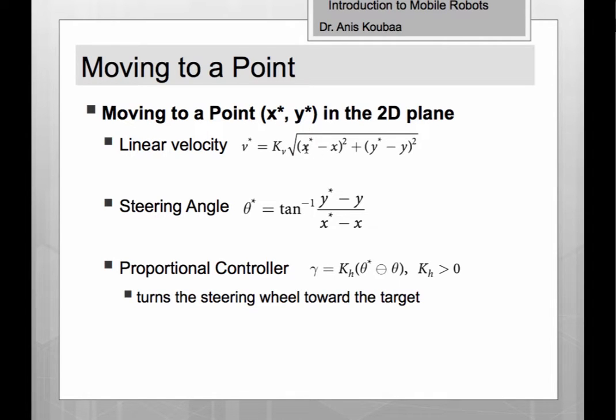This is the Euclidean distance between the goal location, specified by x* (the x of the goal location) minus x of the current position of the robot, squared, plus the y difference—the y component difference—also squared. So this is basically the Euclidean distance, and you can observe...